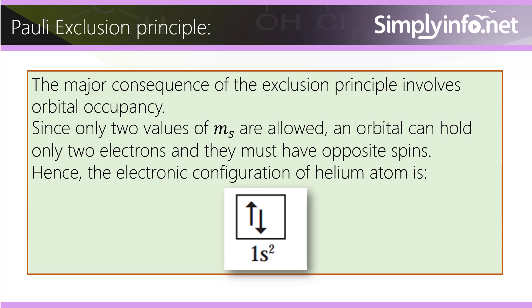The major consequence of the exclusion principle involves orbital occupancy. Since only two values of ms are allowed, an orbital can hold only two electrons and they must have opposite spins. Hence, the electronic configuration of helium atom is 1s².